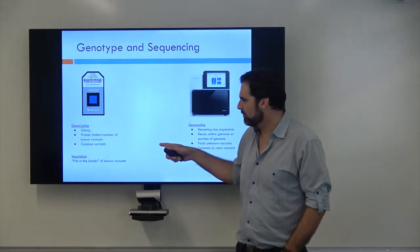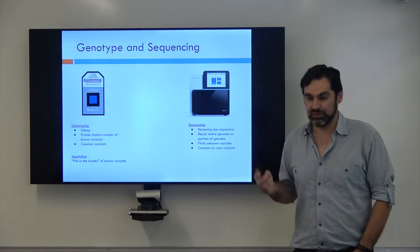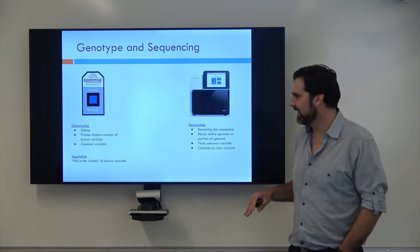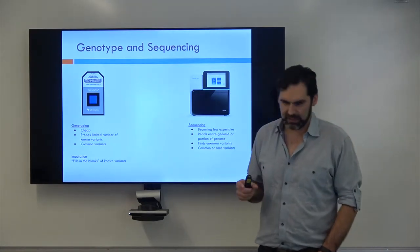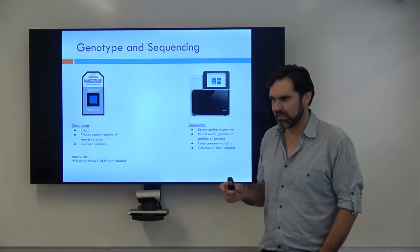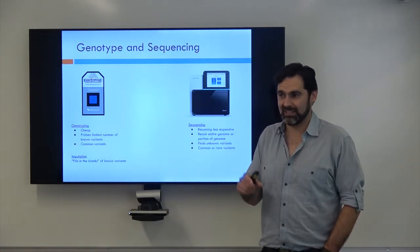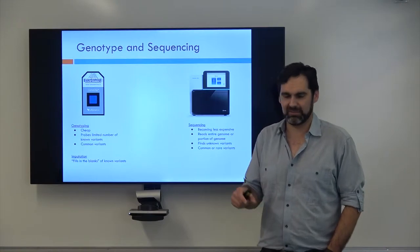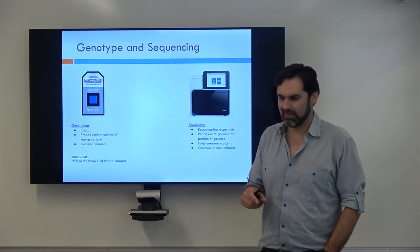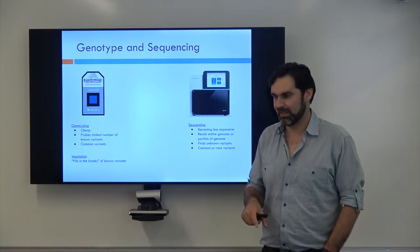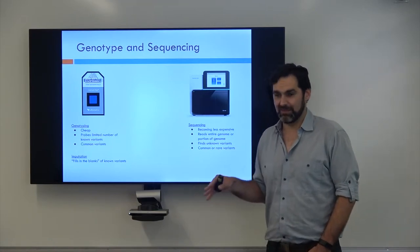So genotyping basically, it's super cheap, that's why people love it. It costs like $100 to genotype somebody and it will probe anywhere from 500,000 to a million positions in the genome where we know variation exists. So it can look for SNPs or indels and it can only look for ones that we know exist. But we can then measure all of them for $100.